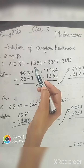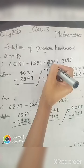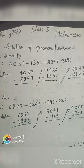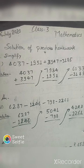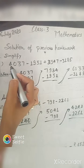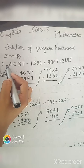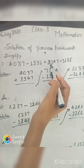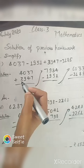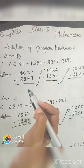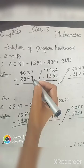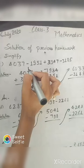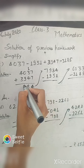So let's see the solution of C and D. C is: 4037 minus 1951 plus 3947 minus 3185. We have to simplify it. As I told you, in these types of questions, firstly we will add, then subtract. There is no minus sign before the first two, so we understand both as positive. We will add 4037 plus 3947. Let's add: seven plus seven is fourteen, carry one, three plus four plus one is eight, zero plus nine is nine, four plus three is seven. So we get 7984.